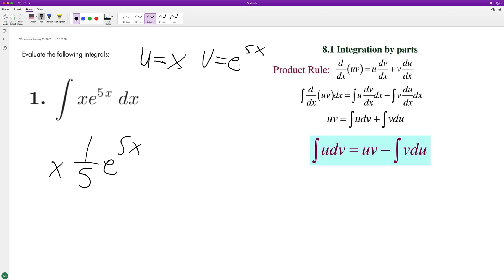And then minus the integral of the derivative of u which is 1 times the anti-derivative of e raised to the 5x. So we ultimately end up with 1/5 x e raised to the 5x.